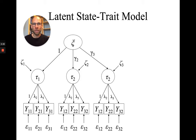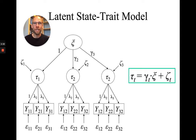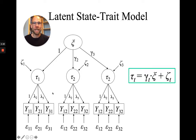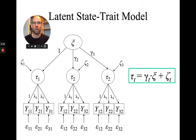We can describe this model with an equation for the second-order factor structure, in which the first-order factors tau_t are a function of the trait factor xi with a second-order factor loading gamma_t. The first loading is fixed to one for identification, as we would do typically in a first-order measurement model. Intercepts are omitted here, assuming the factors are centered, though a mean structure with intercepts could also be included.